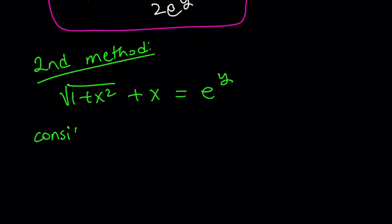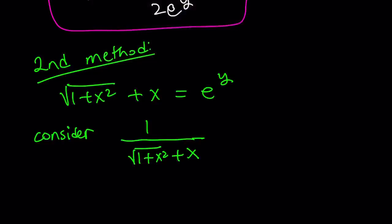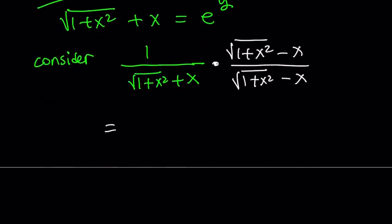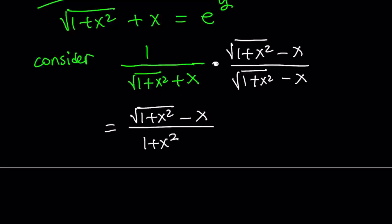Consider the following: 1 over square root of 1 plus x squared plus x. Why am I interested in the reciprocal of this term? Because it contains a radical — we're going to rationalize the denominator. Something interesting is going to happen here. The numerator is going to be 1 times that, so we get square root of 1 plus x squared minus x in the numerator. From difference of two squares, when you multiply two conjugates you get a squared minus b squared, so the denominator becomes 1 plus x squared minus x squared. That is 1. So x squared cancels out and we end up with square root of 1 plus x squared minus x.